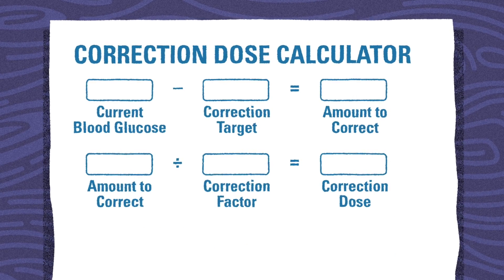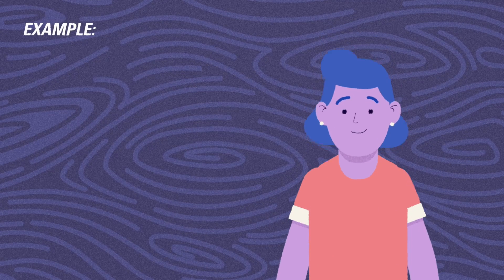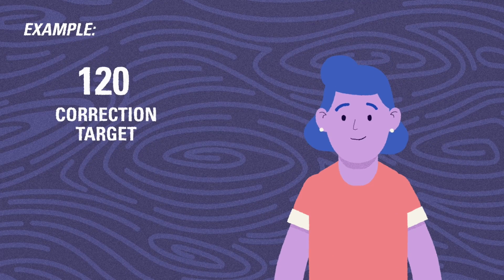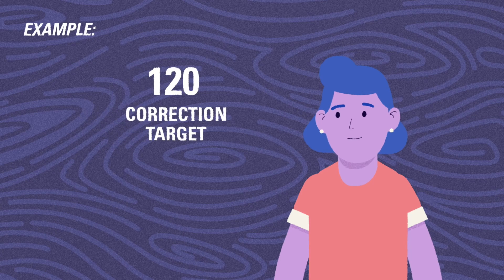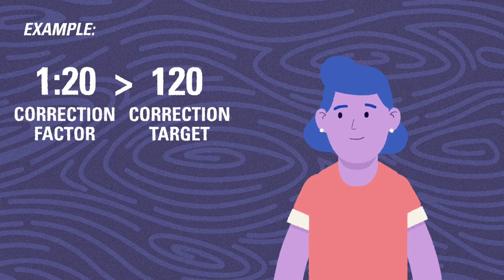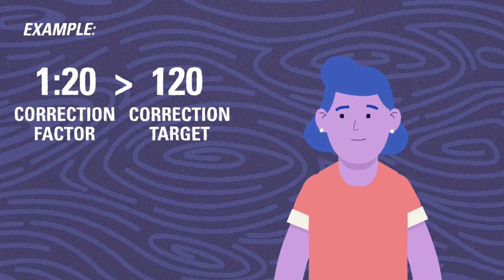Let's try an example. Let's assume a child has a correction target of 120 and a correction factor of one unit of insulin for every 20 points above the correction target.